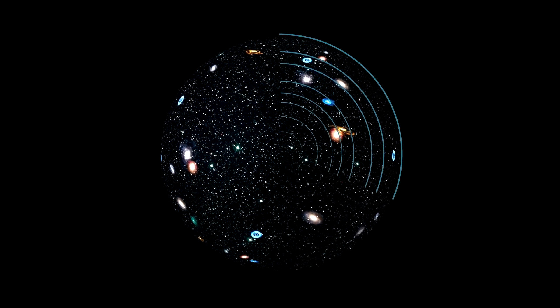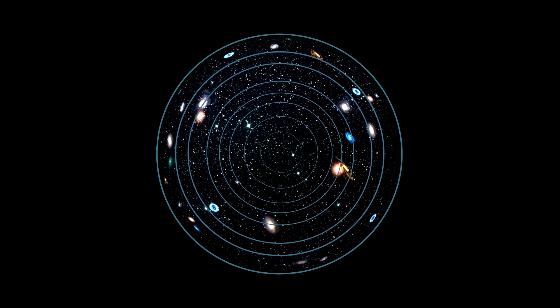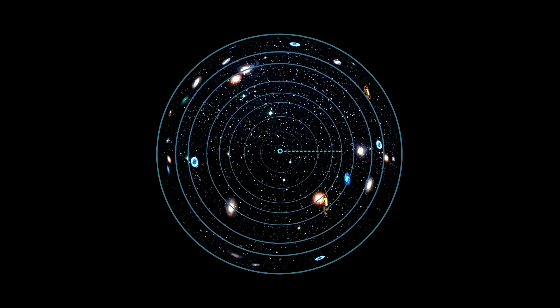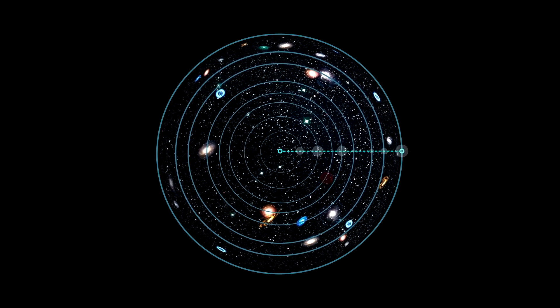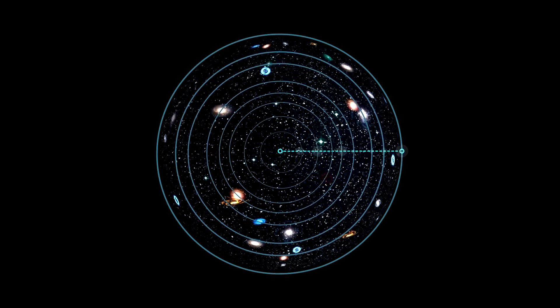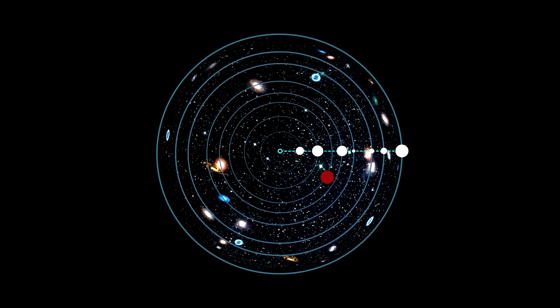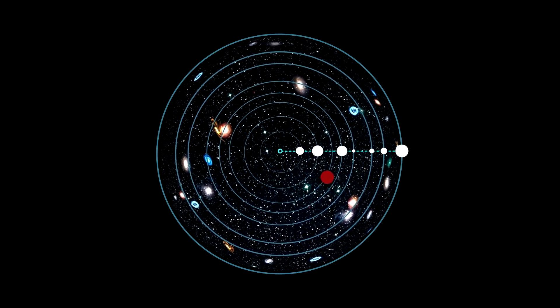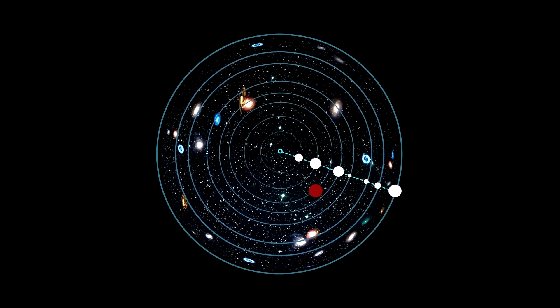The cosmological principle posits the following: viewed on a sufficiently large scale, the properties of the universe are the same for all observers. And according to the Copernican principle, the universe is globally homogeneous and isotropic.